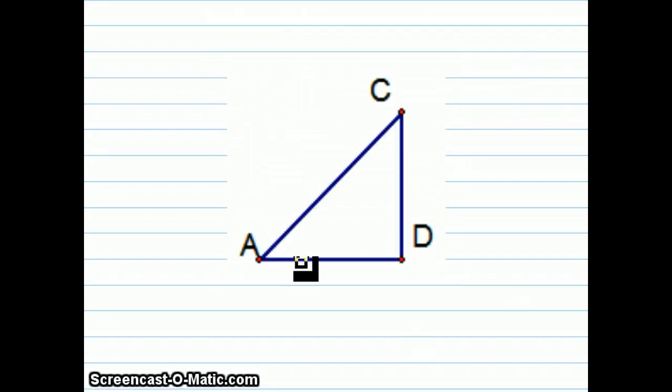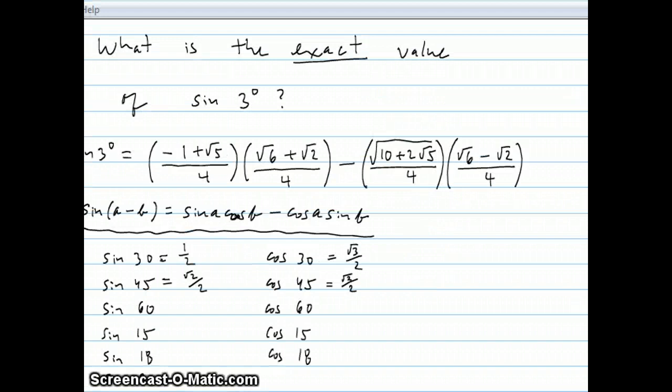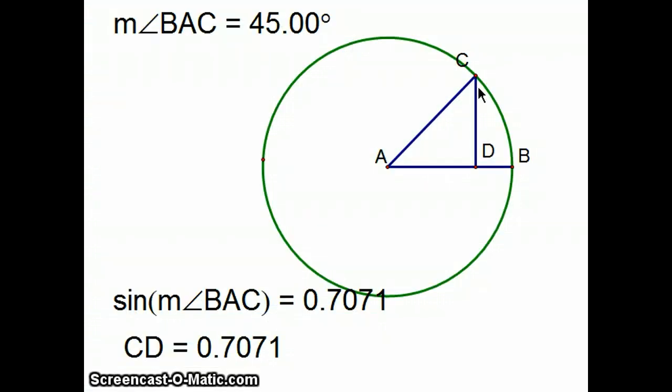For the 45-90 triangle, we have a similar thing going on, where this would be 1, this would be square root of 2 over 2, and this would be square root of 2 over 2. And those are the values for sine and cosine of 45 degrees. And I fill them in on my chart that I'm building. Here's the 45-degree angle on the unit circle picture.